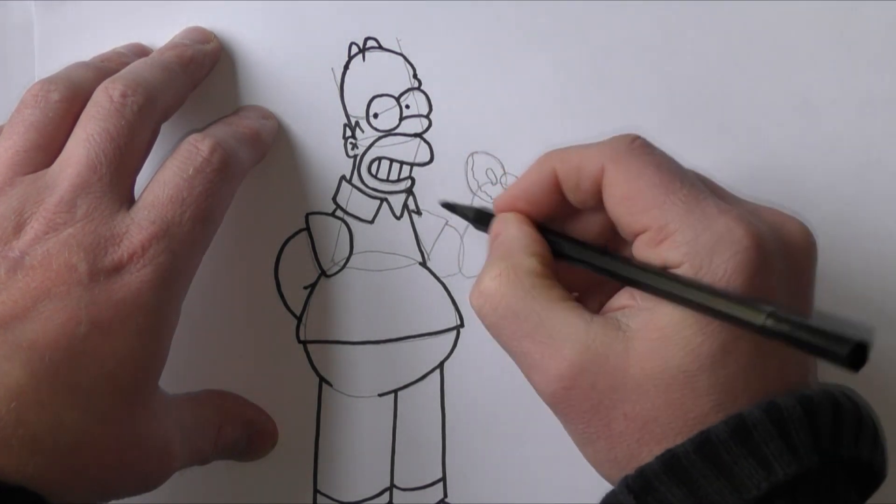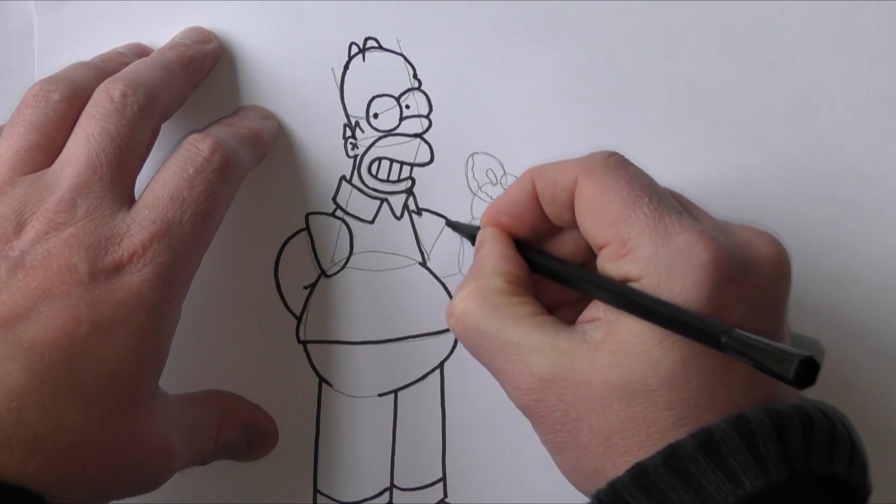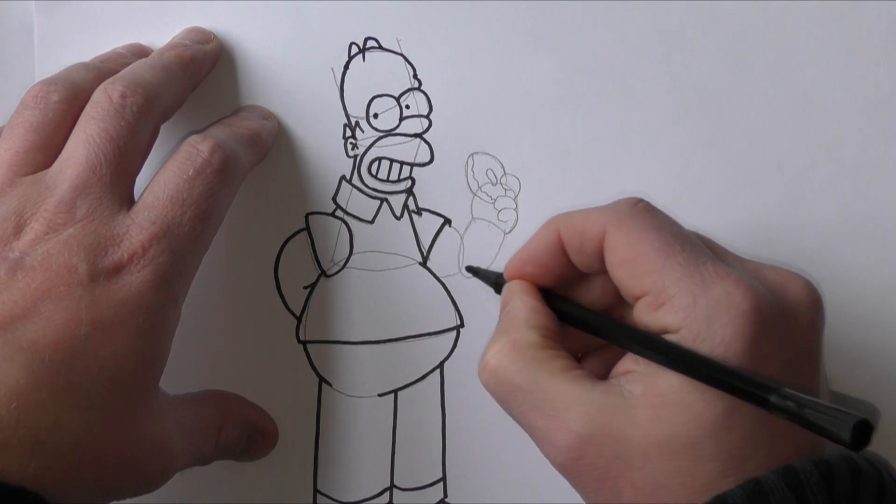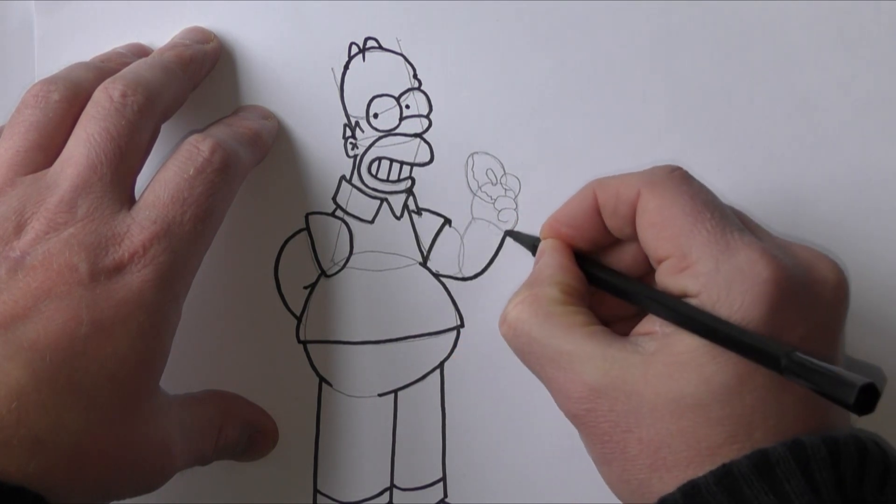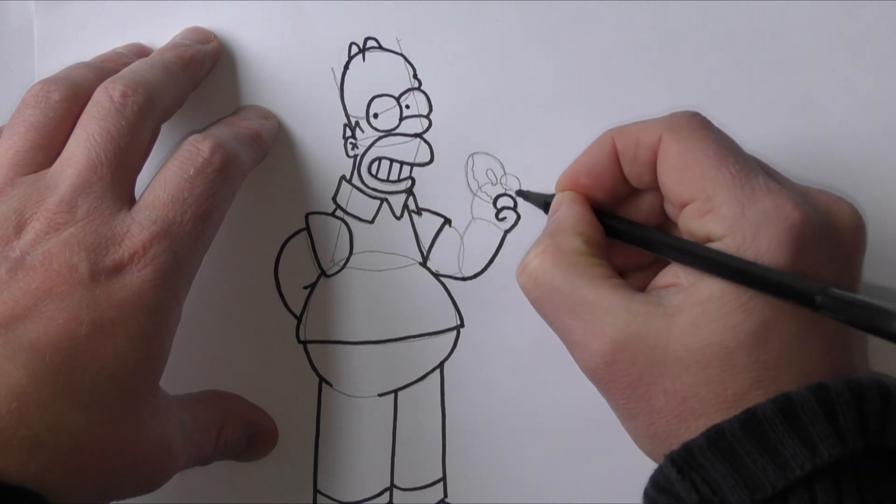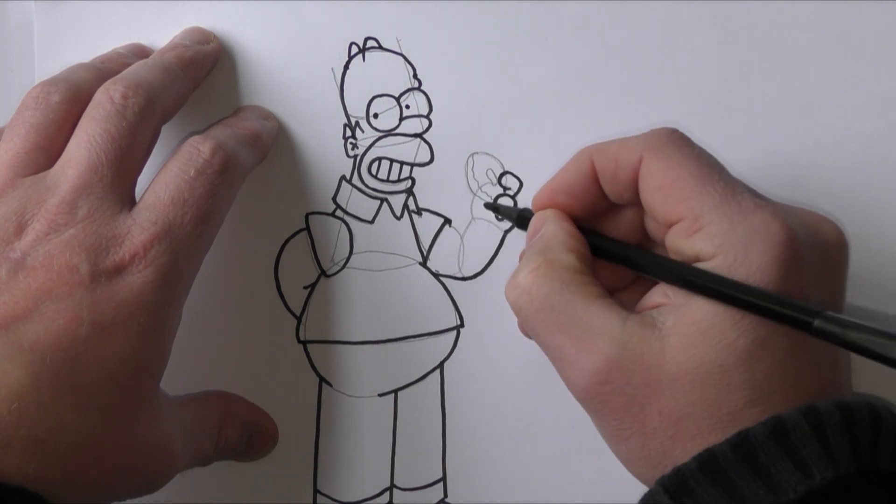Okay, now to do his other arm. We'll start with the sleeve again, slightly over the semi-circle we had in there to give a bit more detail to his shirt. And then we can fill in his arm right up to his fingers, nice curly fingers like he's holding his donut. There we go.